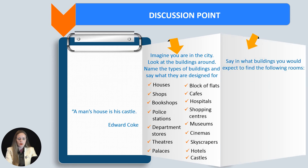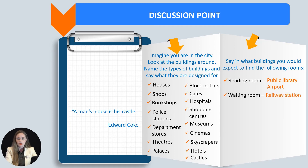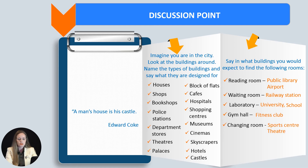Let's go to the next question: say in what buildings you would expect to find the following rooms. A reading room — in a public library or sometimes in the airport. A waiting room — in a railway station. A laboratory — in a university or in a school. A gym hall — in a fitness club. A changing room — in a sports center or in a theater. A canteen — in a factory or in an office. A playroom — in a shopping center or in a house.